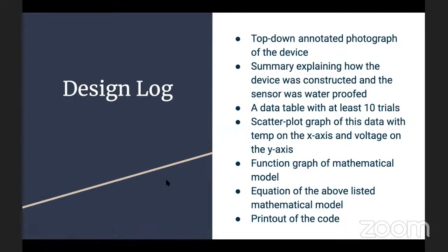Another thing we're scored on is the design log. The design log must have a top-down annotated photograph of the device, a summary explaining how the device is constructed and the sensor was waterproofed, along with the purpose of each component. You must have a data table with at least 10 trials, a scatterplot graph of this data with temperature on the x-axis and voltage on the y-axis, a function graph with the mathematical model overlaid on the scatterplot, an equation of the mathematical model, and a printout of the code with the mathematical model and LED code highlighted.